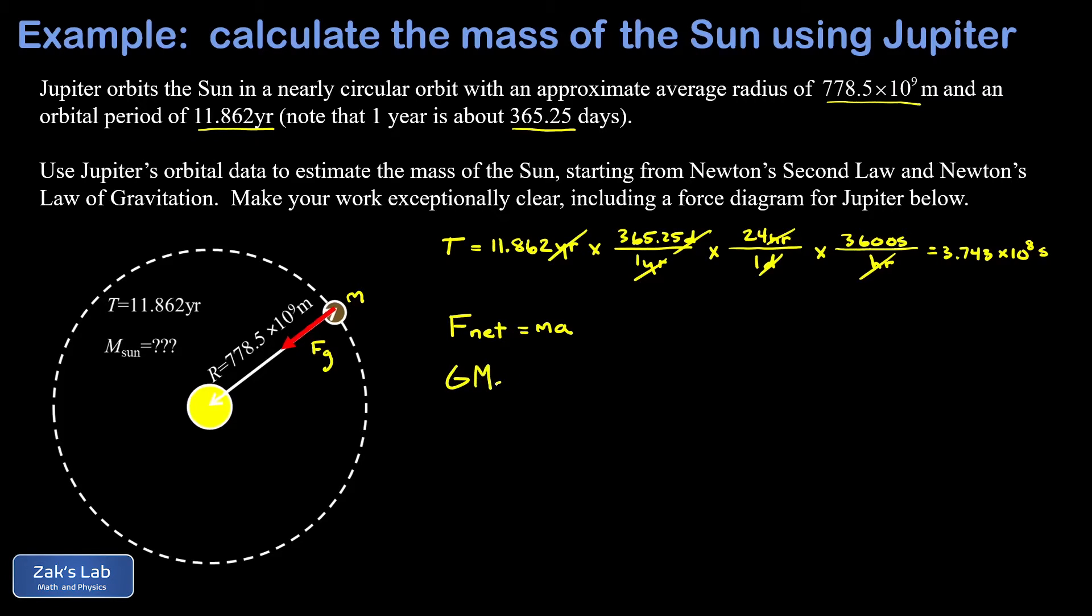So the mass of the Sun and the mass of Jupiter which I call little m, divided by the distance between them squared, big R. This equals the mass of Jupiter times its acceleration, and that's a centripetal acceleration which we can write in terms of period as 4π² times r divided by the period squared. One of the key points here is that the mass of Jupiter cancels out.